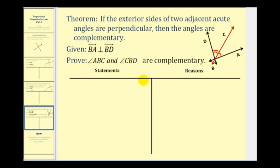Let's talk about our plan before we start. We know if these two rays are perpendicular, then angle ABD — this large angle — would have to be a right angle and therefore measures 90 degrees. It's also true that if we sum these two acute angles, it must equal the measure of angle ABD. So if angle ABD measures 90 degrees, then the sum of these two acute angles must also measure 90 degrees, and therefore they'll be complementary.